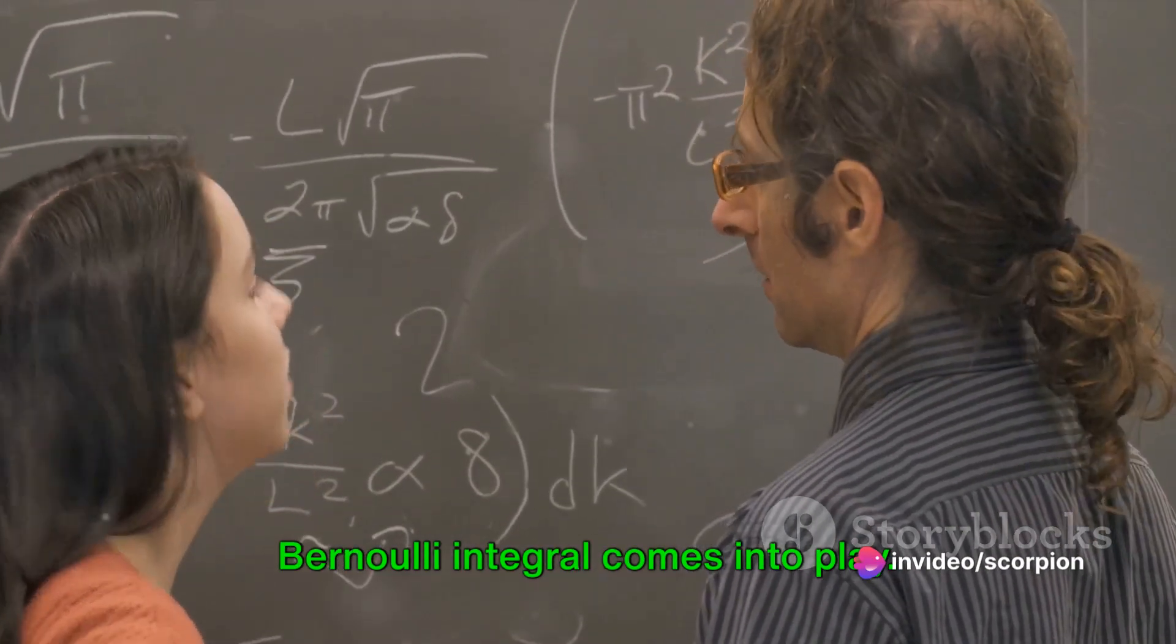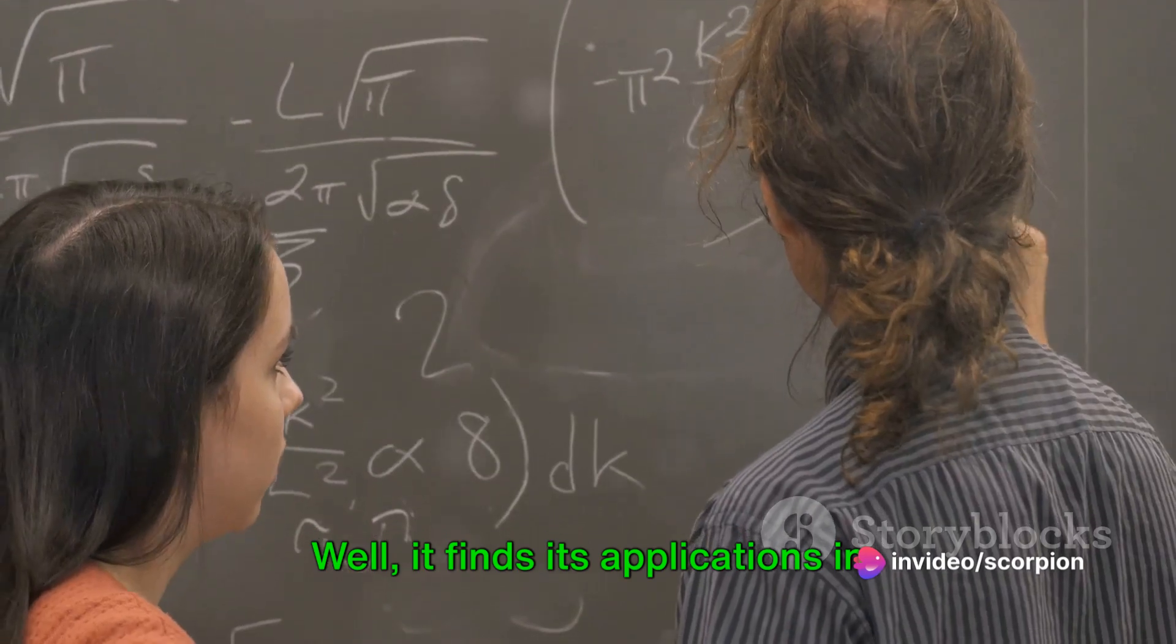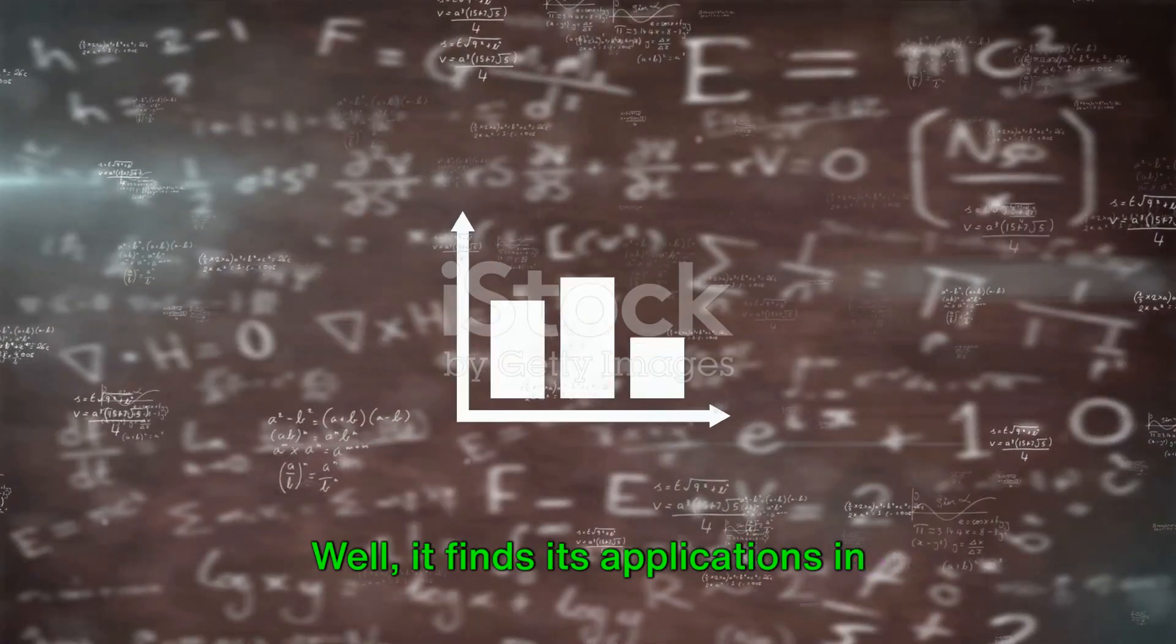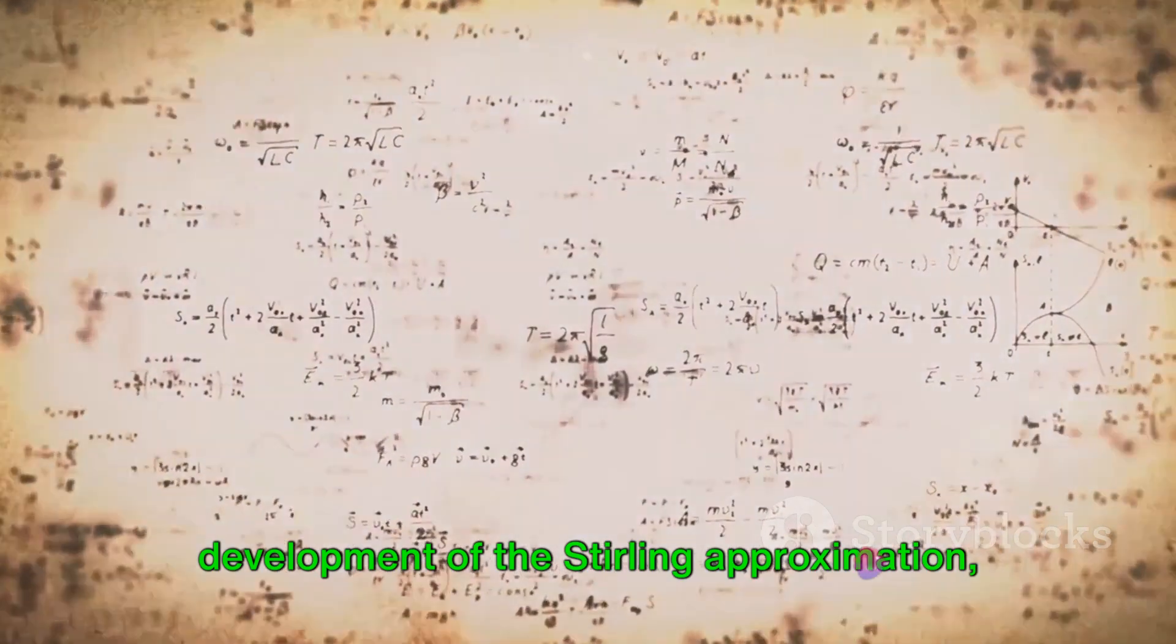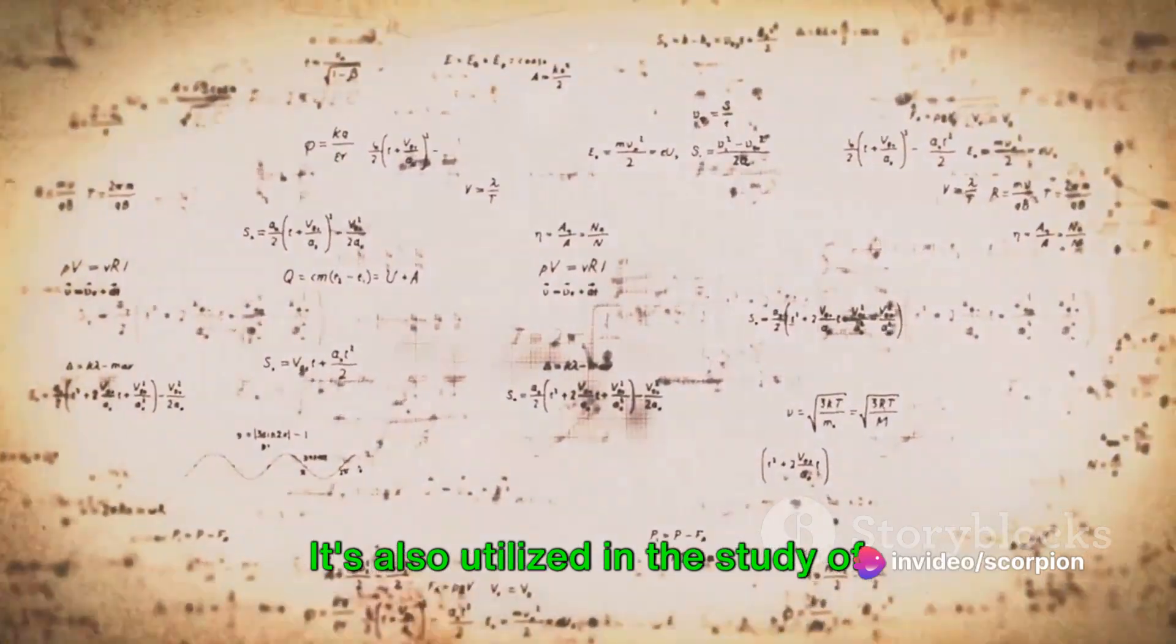Now you might wonder where this Bernoulli integral comes into play. Well, it finds its applications in several areas of mathematics. For instance, it's used in the development of the Stirling approximation, a formula for approximating the factorial function. It's also utilized in the study of probability distributions such as the binomial and Poisson distributions.